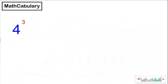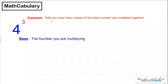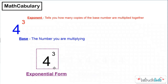So just a quick review of our mathcabulary. If you've been with us, you don't need to write this down again. But if this is your first Instructor Beats lesson, this is just some basics we'll be talking about throughout today. Here we have our base number, which is the number you're multiplying, and our exponent. The exponent tells you how many copies of the base number are going to be multiplied together. And a lot of times we see this in what we call exponential form.